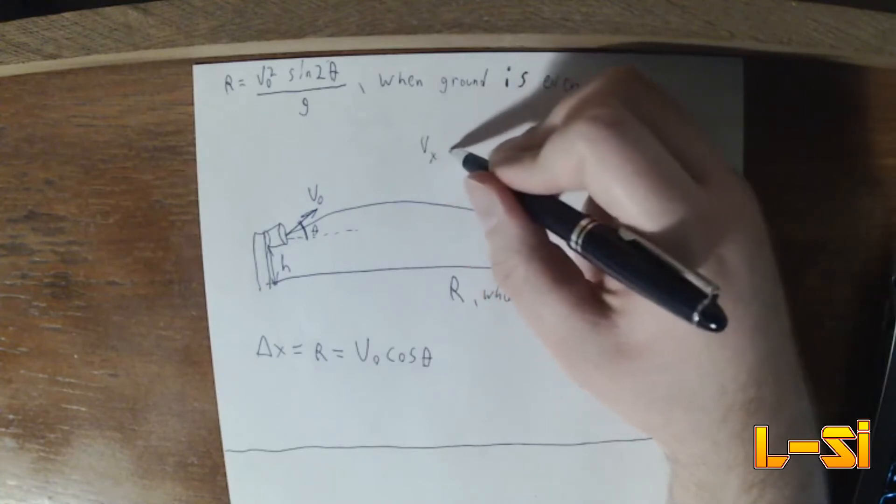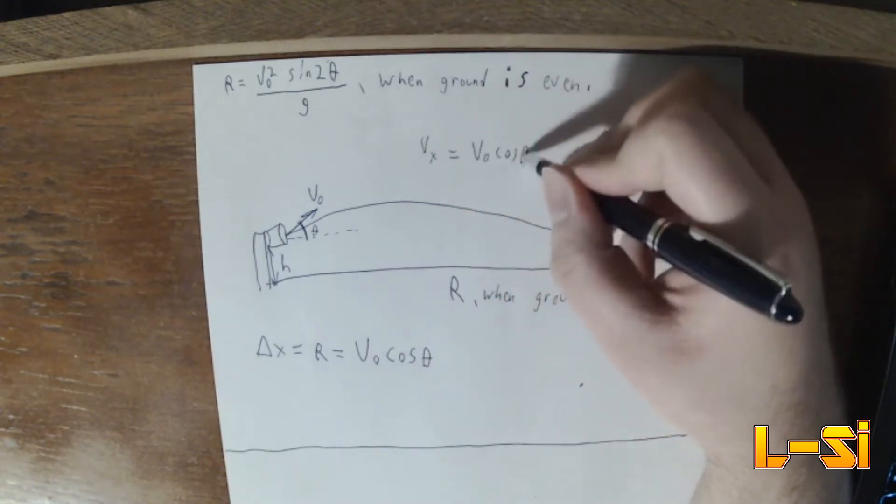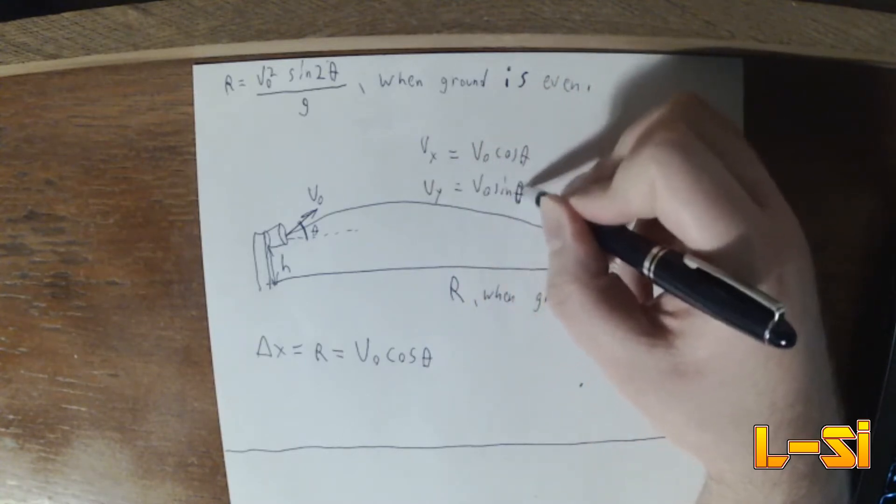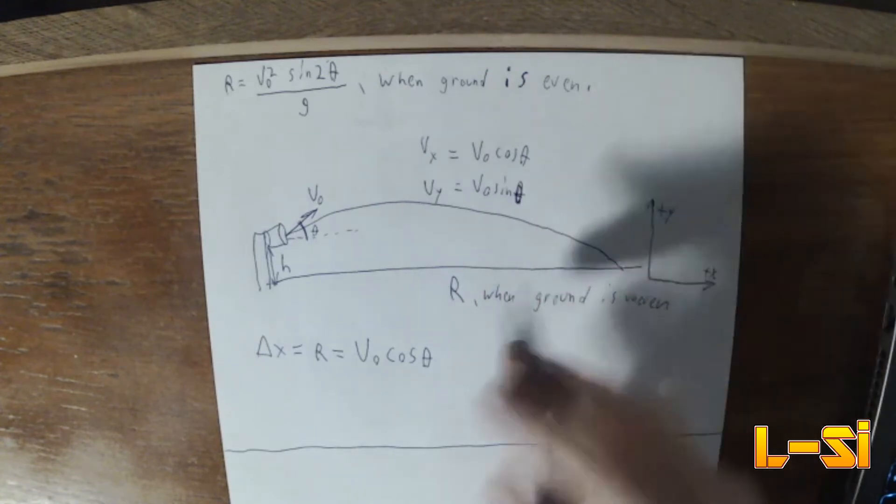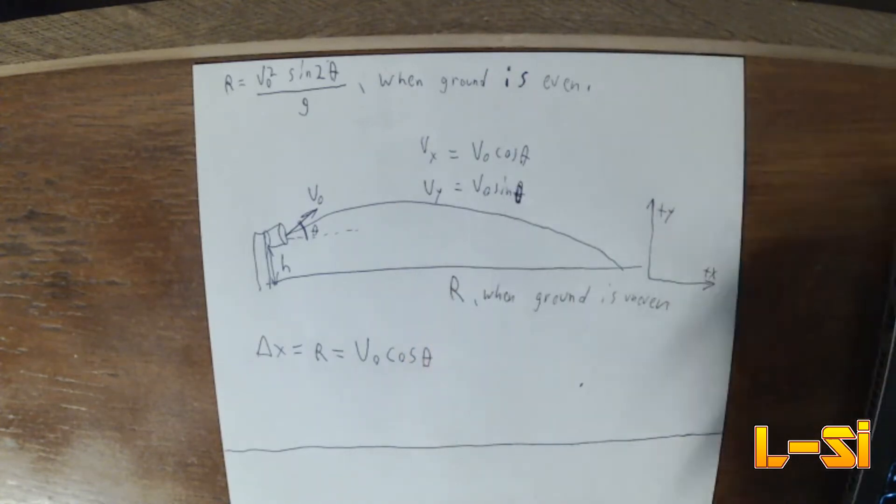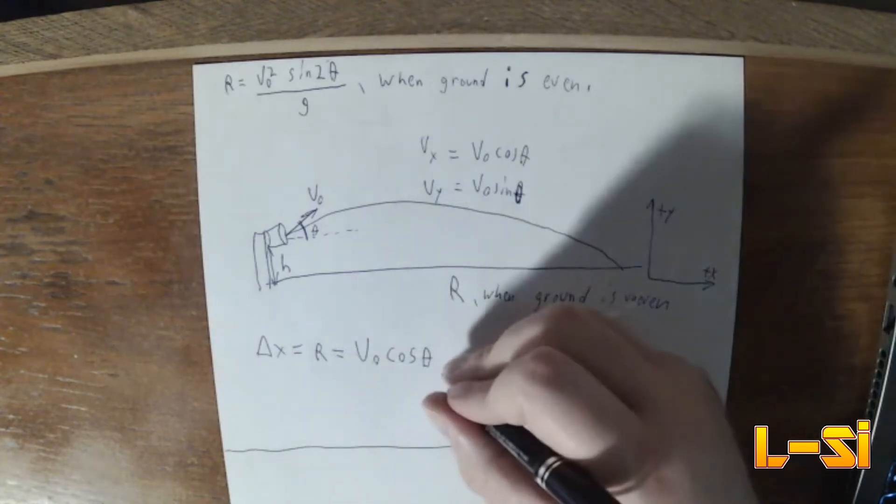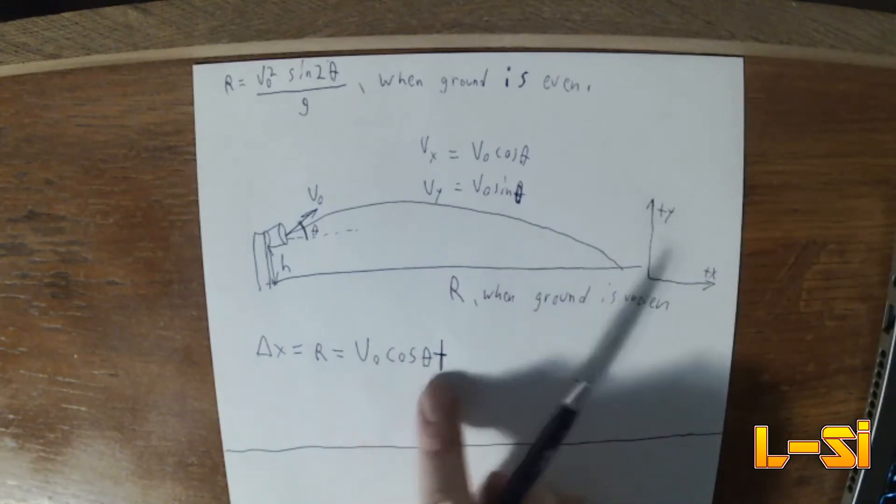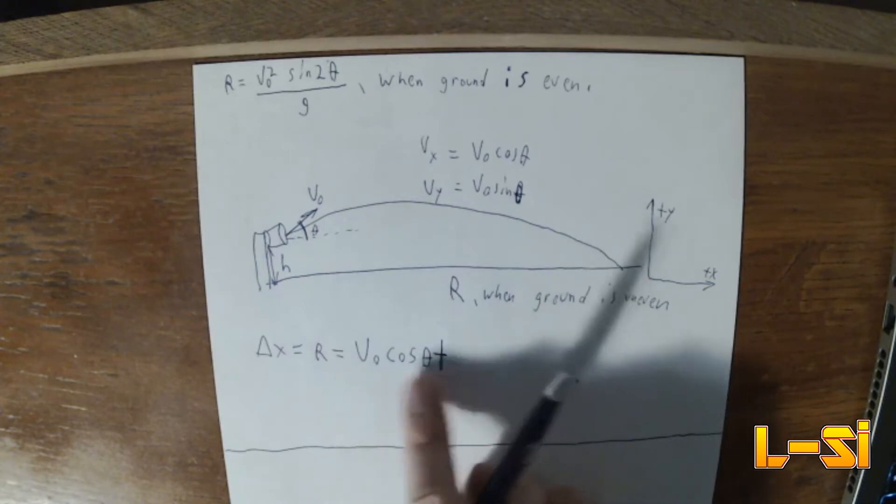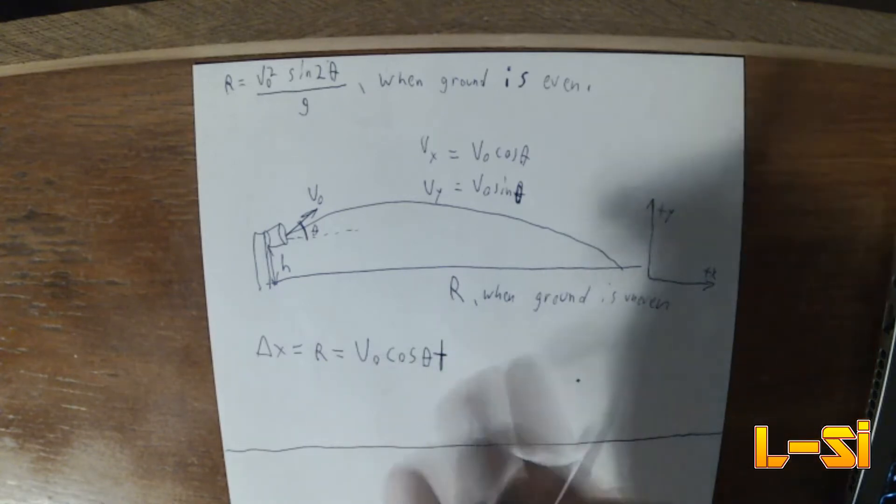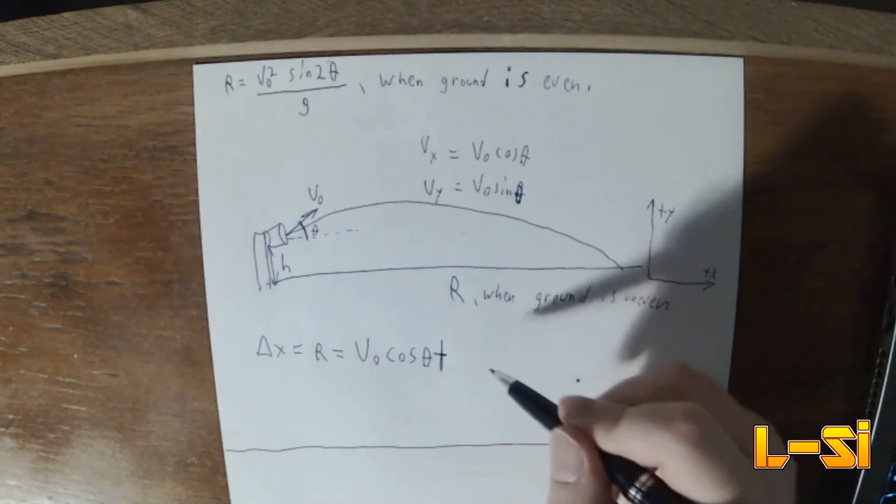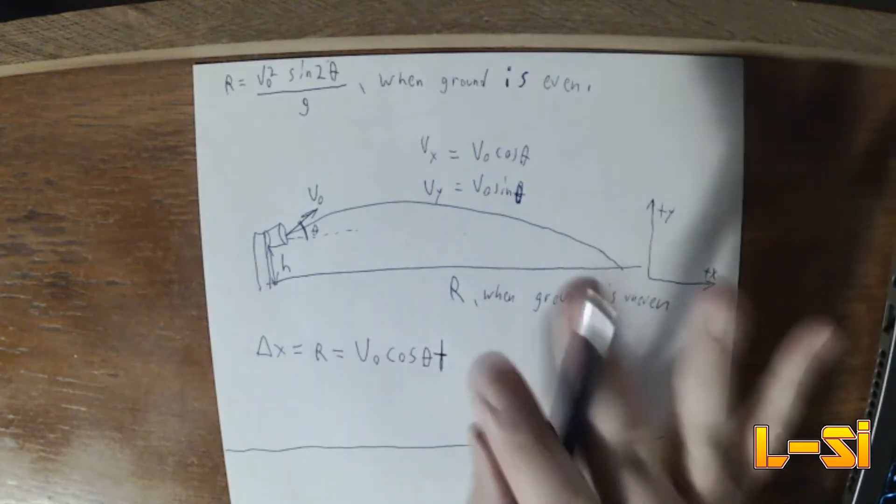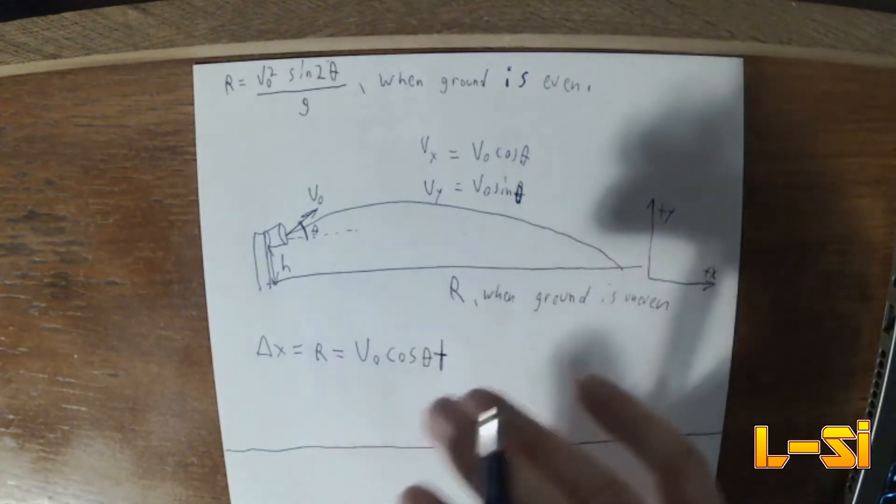V sub X equals V-naught cosine of theta, and V sub Y equals V-naught sine of theta. And I went over this in the other video, but this just is trigonometry. So times time. And the reason for that is we're going to have some initial velocity times time will give you distance. Velocity times time will always give you a distance. And then there's no acceleration here because there should be no acceleration in the X. We're neglecting things like air resistance. So we just have velocity times time.